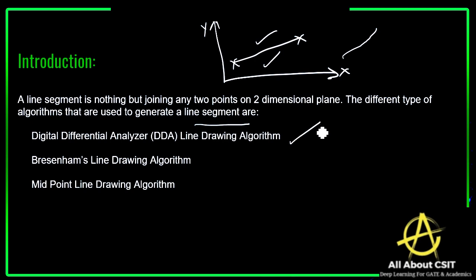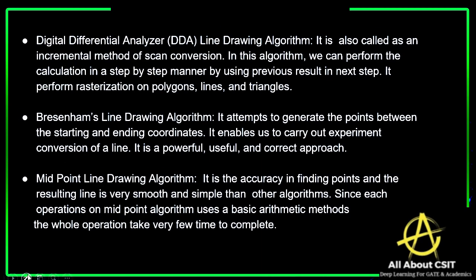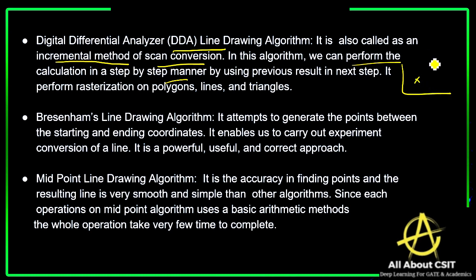The three types of algorithms used to generate line segments are: the Digital Differential Analyzer line drawing algorithm, Bresenham's line drawing algorithm, and the midpoint line drawing algorithm. A DDA algorithm is also called an incremental method of scan conversion — finding one point next to another point. Calculations are performed step-by-step, using the previous result to generate the next point. It performs rasterization on polygons, lines, and triangles.